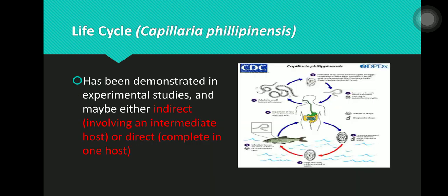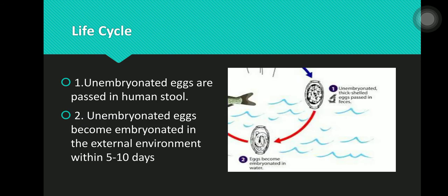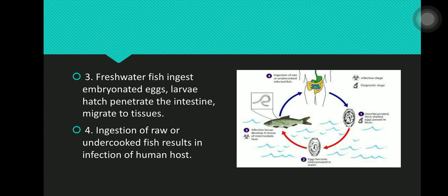The life cycle of Capillaria philippinensis has been demonstrated in experimental studies and may be either indirect, involving an intermediate host, or direct, completed in one host. In stage 1, unembryonated eggs are passed in human stool. After that, the unembryonated eggs become embryonated in the external environment within 5 to 10 days. In stage 3, freshwater fish ingest embryonated eggs, and the larvae hatch, penetrate the intestine, and migrate to the tissues.